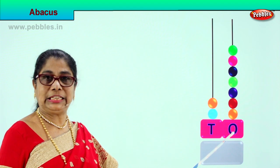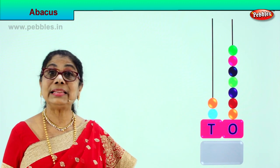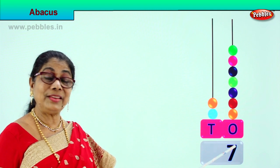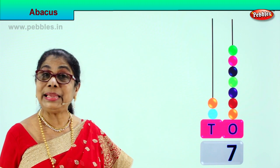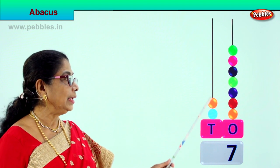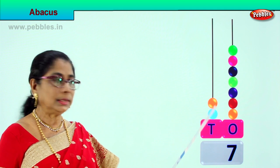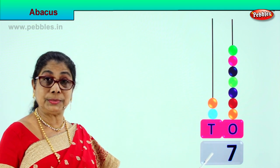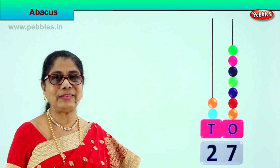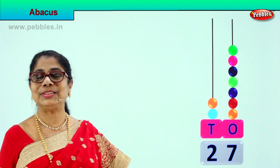Let's count the ones first. How many ones are there? 1, 2, 3, 4, 5, 6, 7 — there are 7 beads, meaning 7 ones. We write 7 here in the ones place. Let's go to the tens place — every bead is 10. We count: 1 ten, 2 tens. In the tens place we have 2, so we write 2. 2 tens is 20, and 7 ones gives us 27.